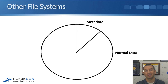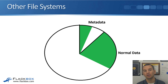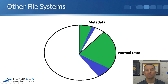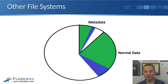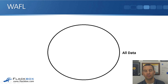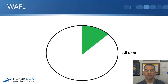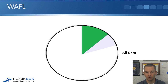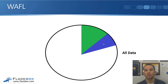Let's compare WAFL to other file systems that have fixed locations on disk for metadata. With existing data already on the disk, the metadata is in the metadata section and normal data in the normal data section. When new data is written, metadata goes to the metadata section and normal data to the normal data section — these are not sequential writes, so disk seeks are required, which takes time and affects performance. WAFL works differently: it has no fixed locations on disk for any particular type of data. All data is written sequentially, and new data can also be written sequentially, giving better performance.